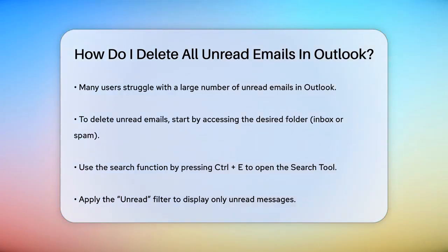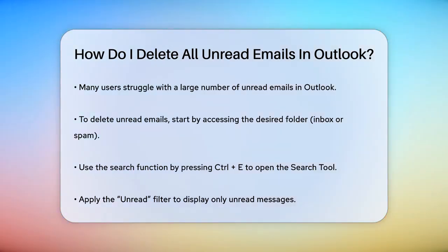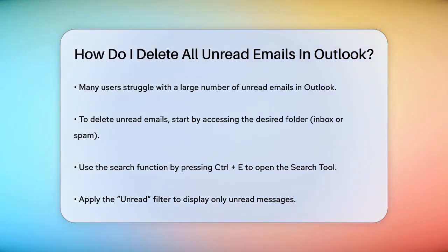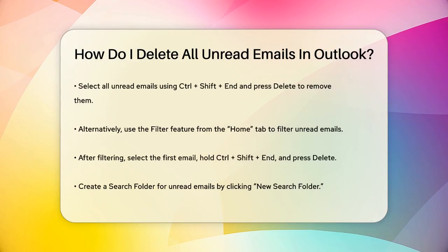First, let's use the search function in Outlook. Start by going to the folder where you want to delete the unread emails, such as your inbox or spam folder. Once you're in the right folder, press Ctrl-E to open the search tool. In the search options, click on the unread filter. This will show you only the unread messages. To select all these emails, press Ctrl-Shift-End and then simply press the Delete key to remove them all.